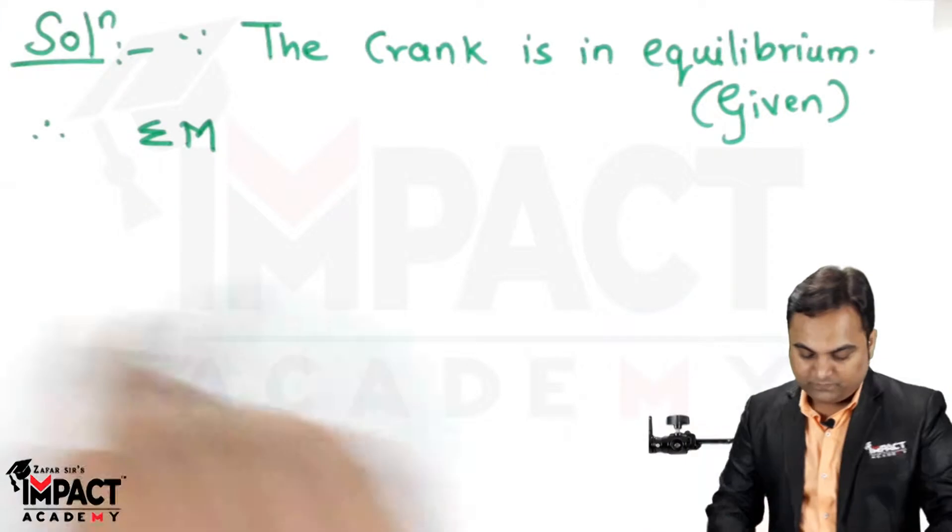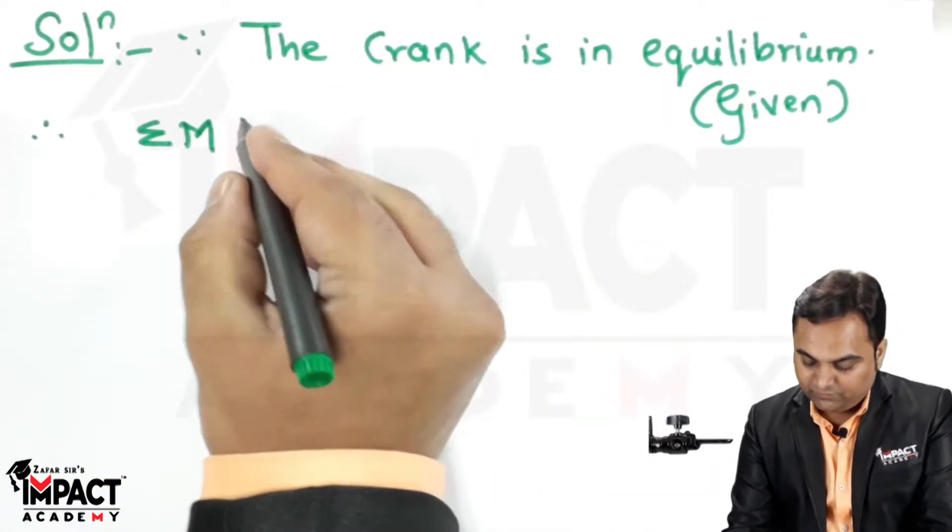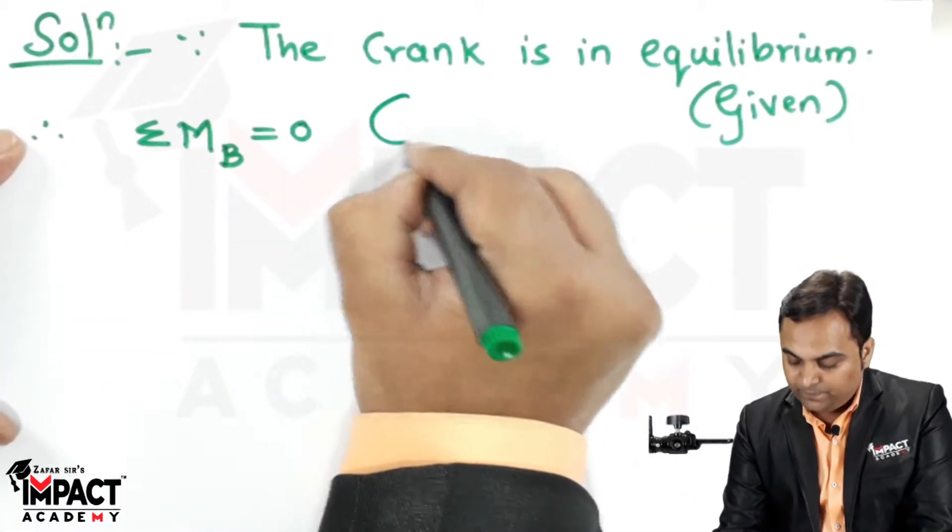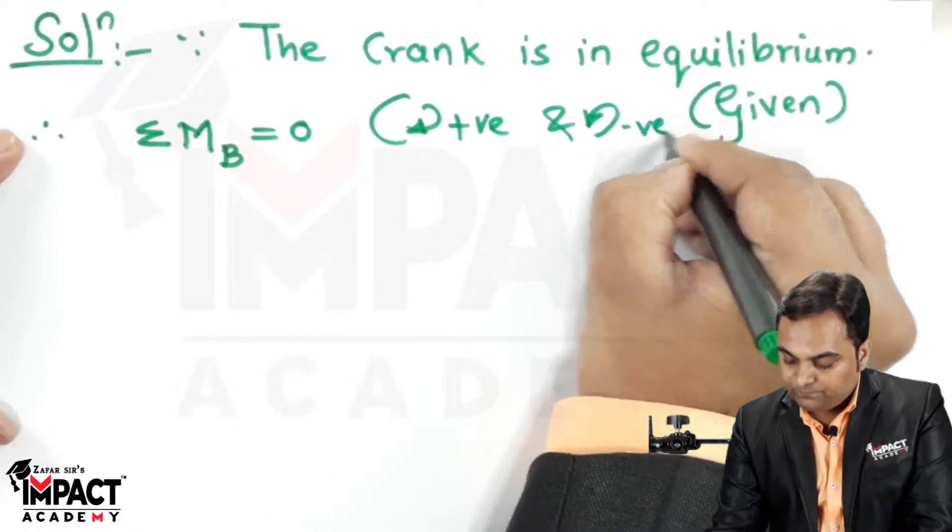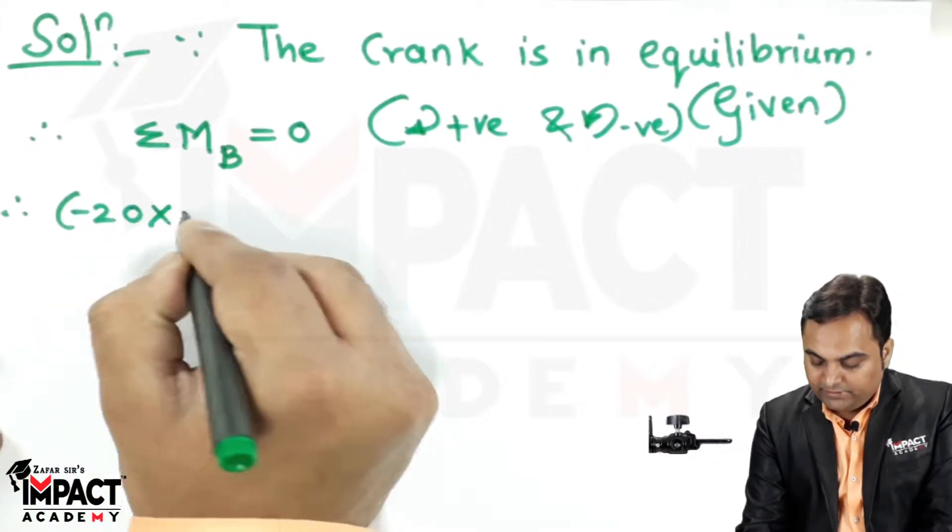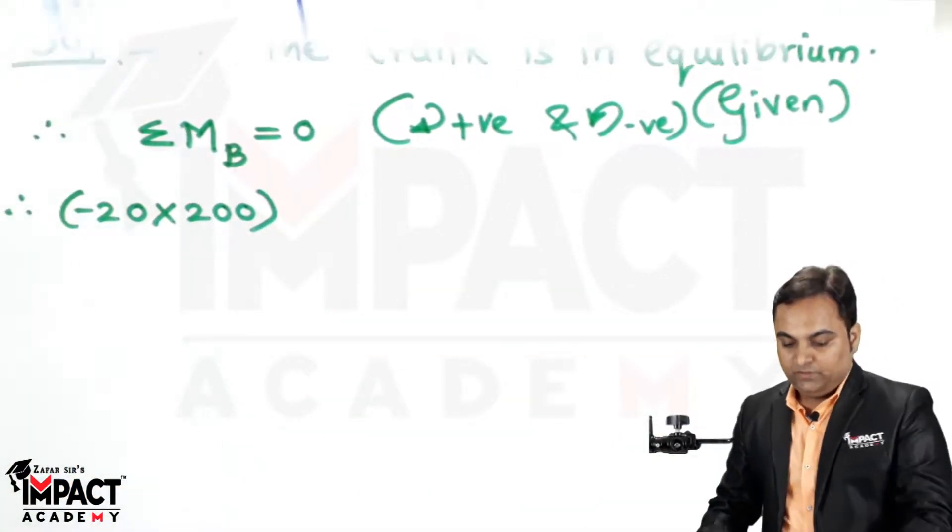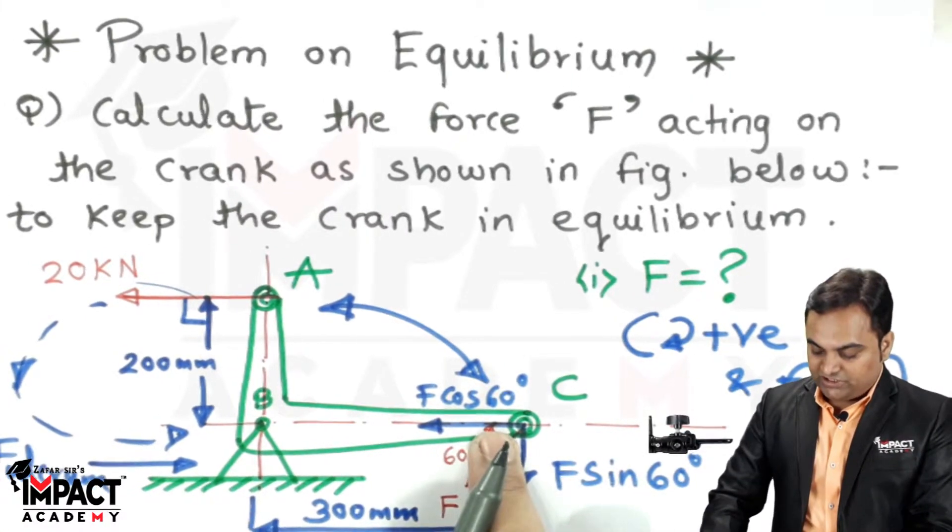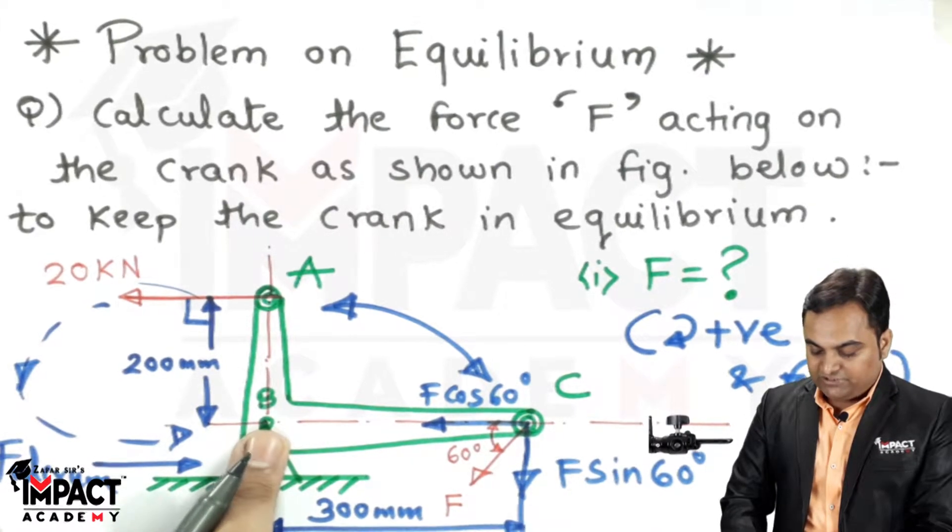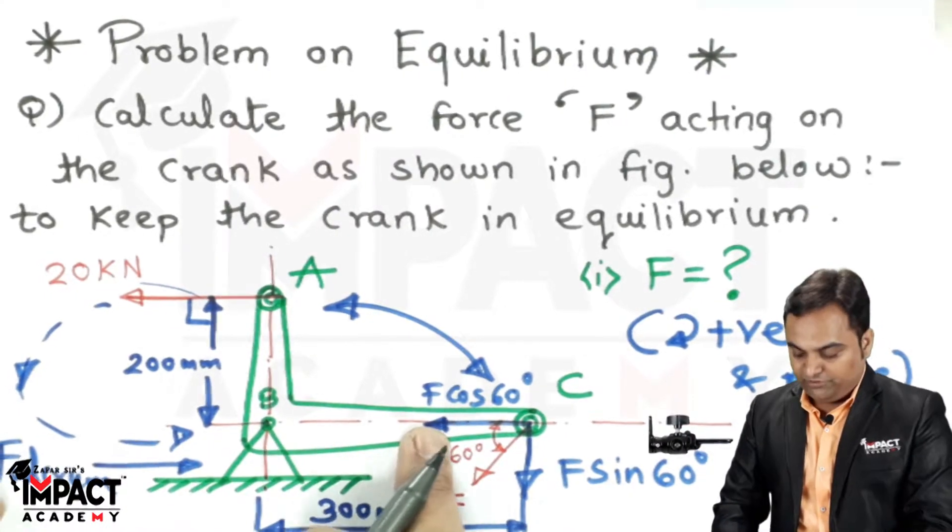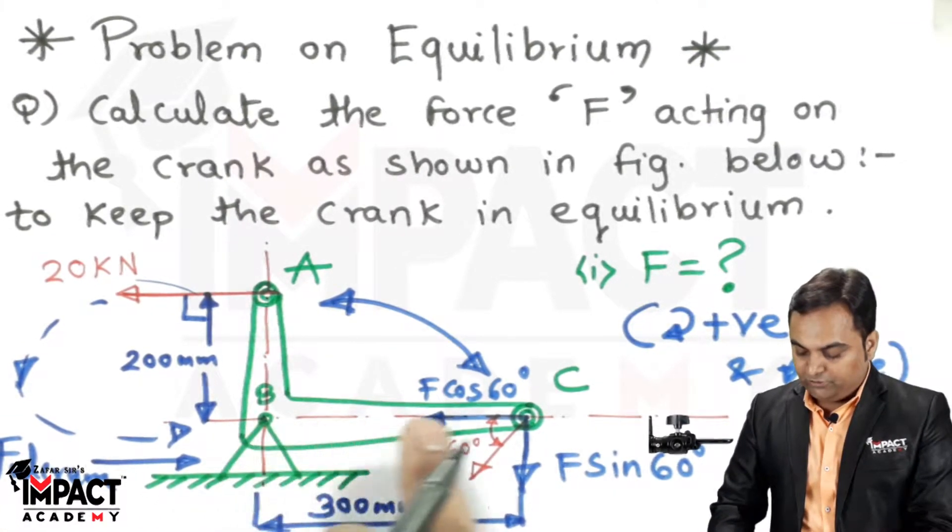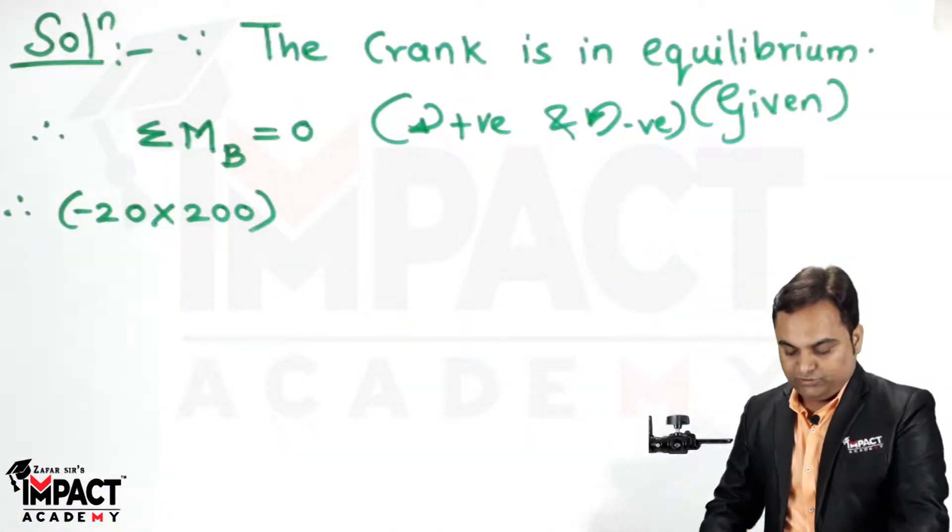The summation of moments about point B equals zero, with clockwise positive and anti-clockwise negative. So minus 20 into 200. Out of the two components, F cos 60 is passing through the same line of action as point B, so there is no perpendicular distance between point B and F cos 60. Its moment would be zero.